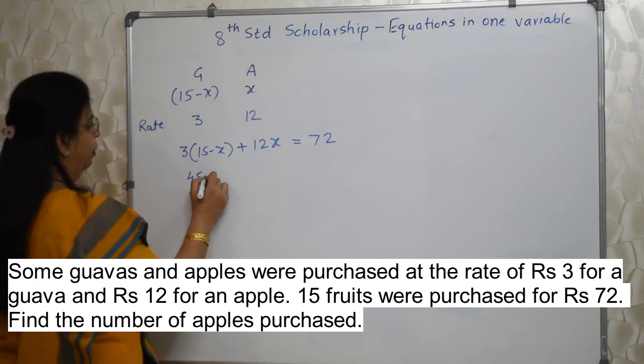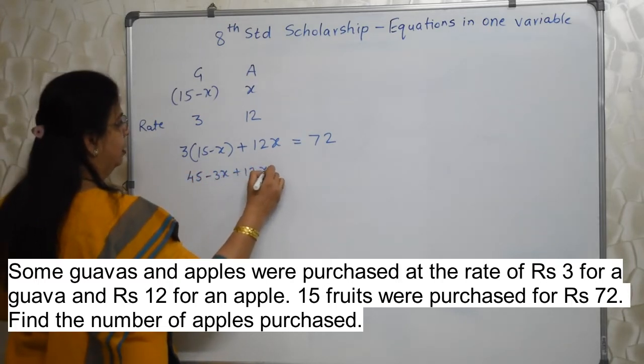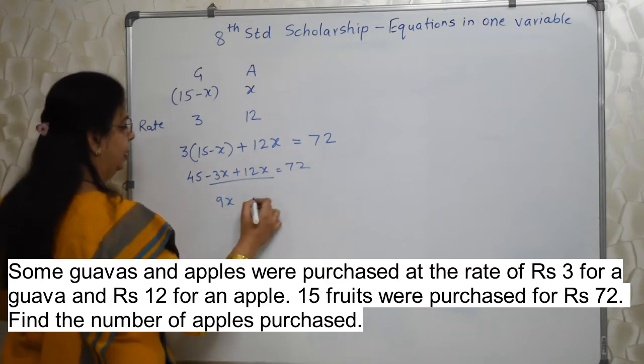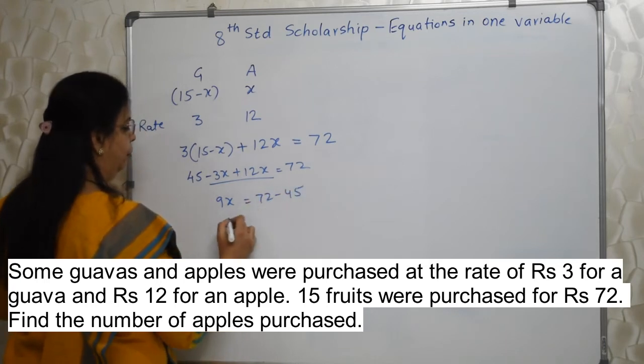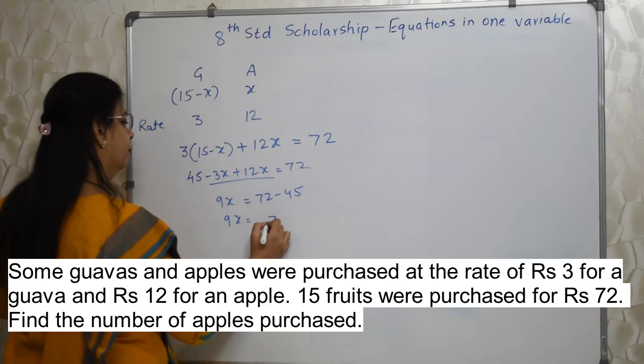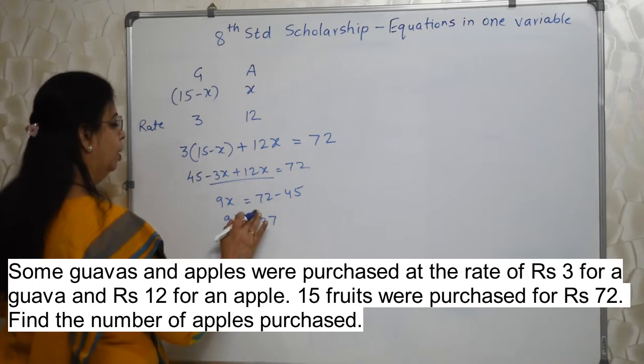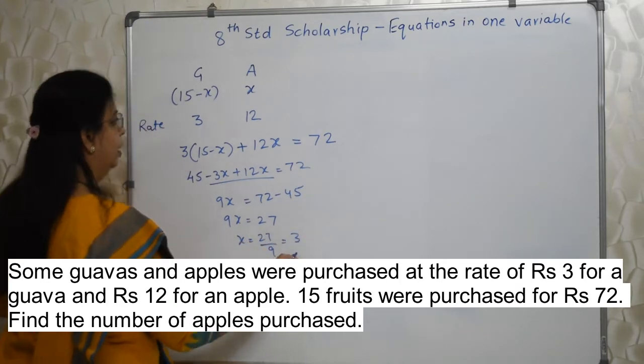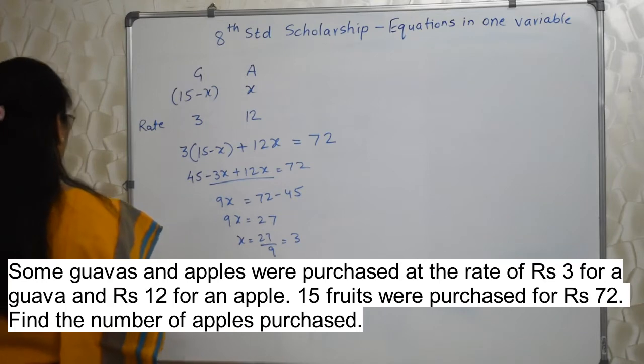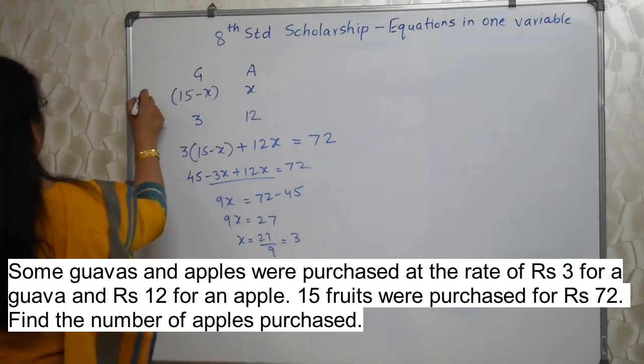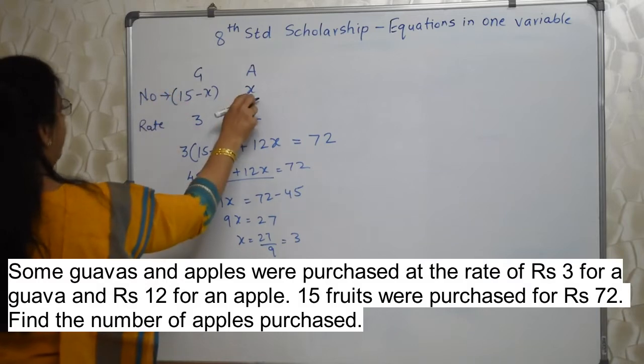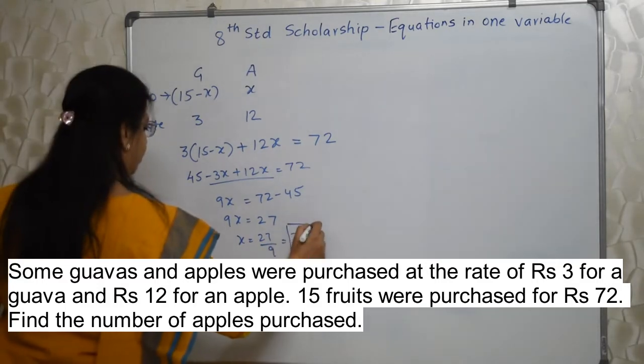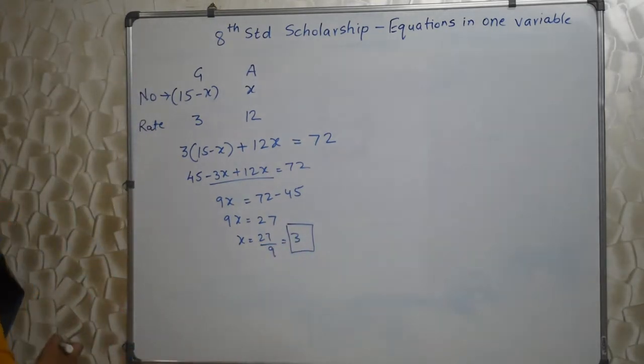3 into 15 is 45 minus 3x plus 12x is equal to 72. Let's add this: 9x plus 45. We will take 45 to that side, so it will be minus 45. So 9x is equal to 27. So x is equal to 27 upon 9, that is 3. Now we have found the value of x. X is number of apples. So what have they asked? Find the number of apples purchased. So answer is 3.